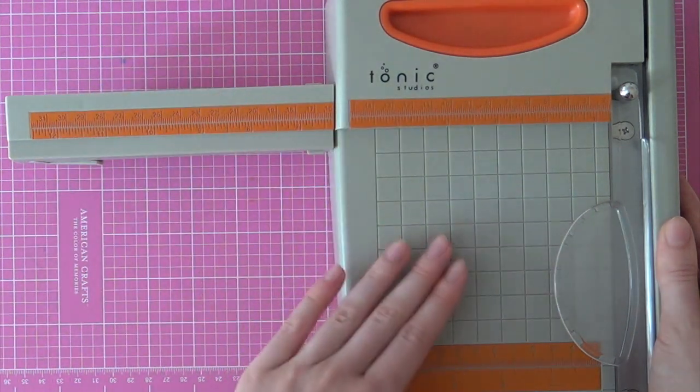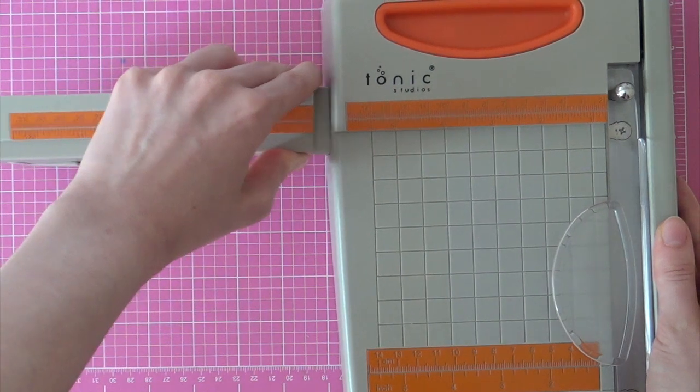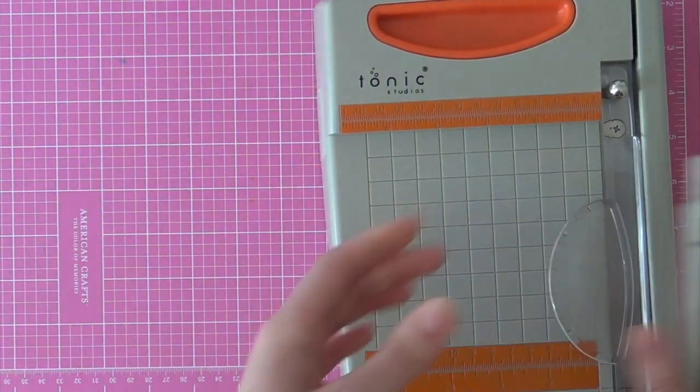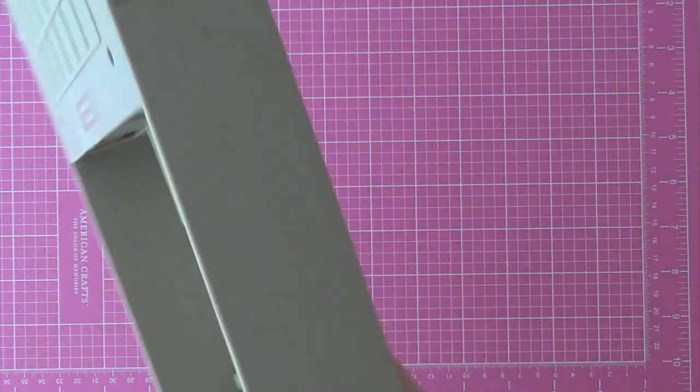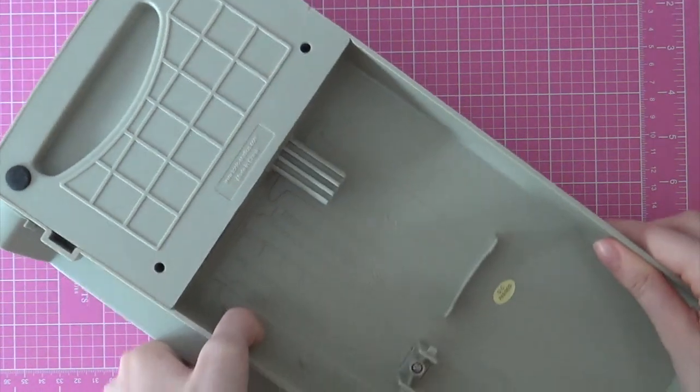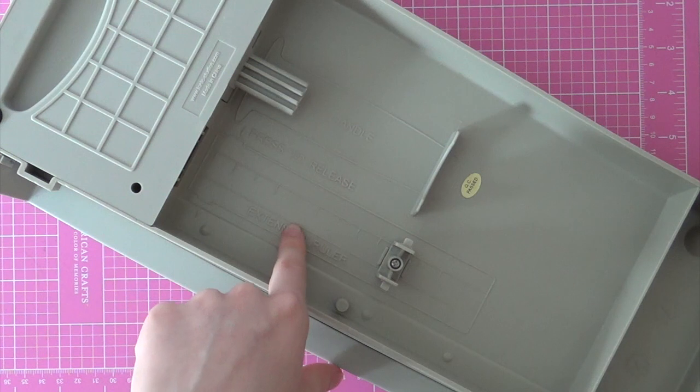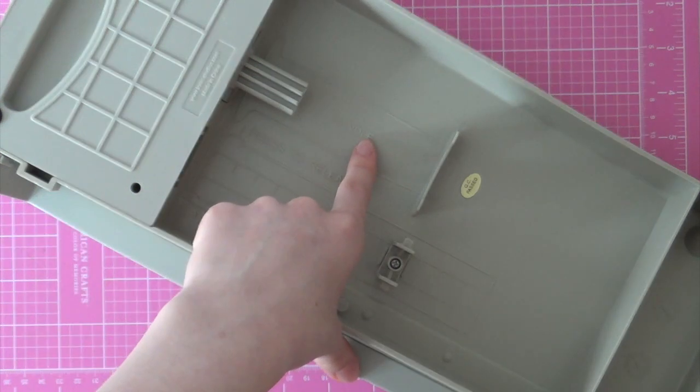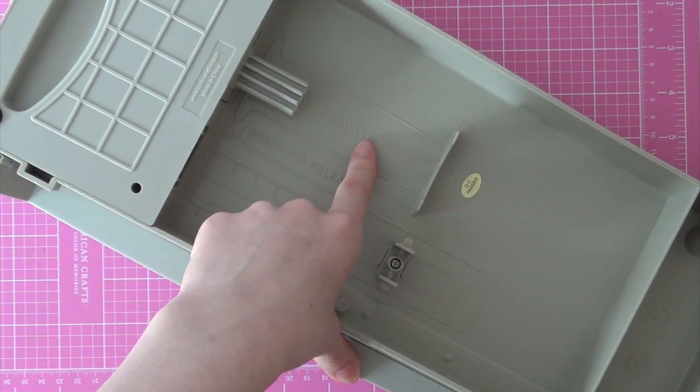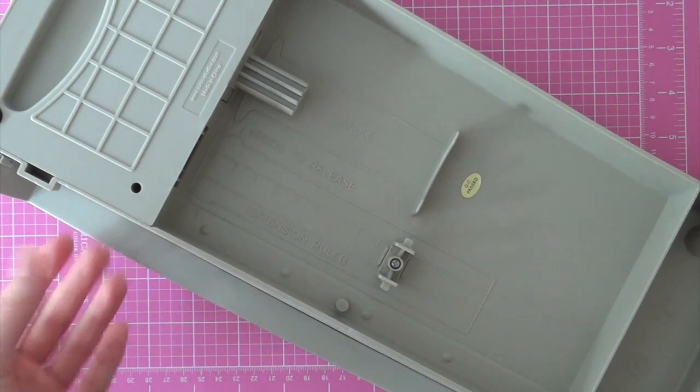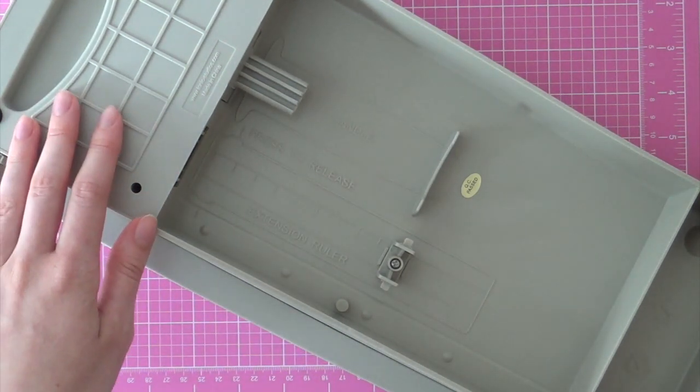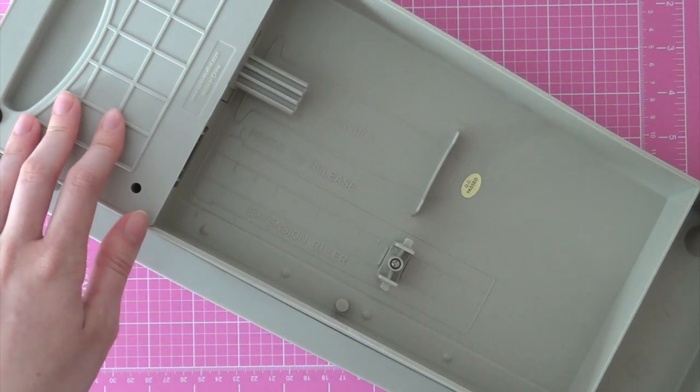So you can just take this off, turn your trimmer around, and then you can actually store it over here and you can also store the cush grip handle over here. So this makes it easy to store in small craft rooms or you can also store it in a drawer like I will be doing.